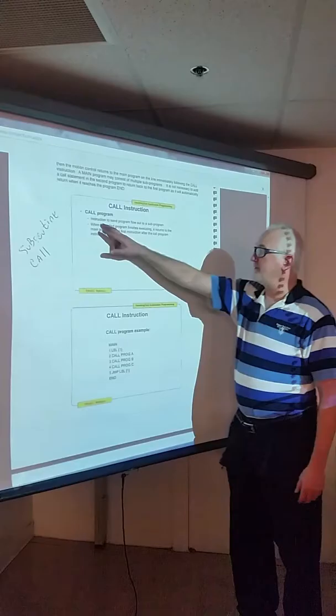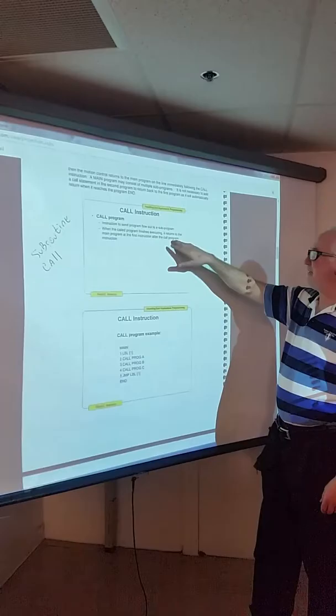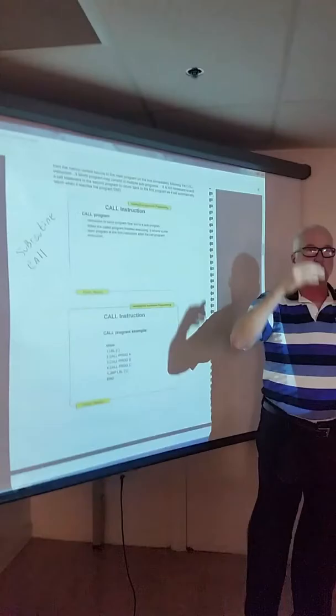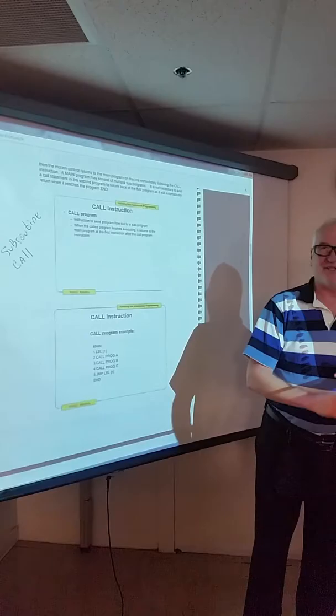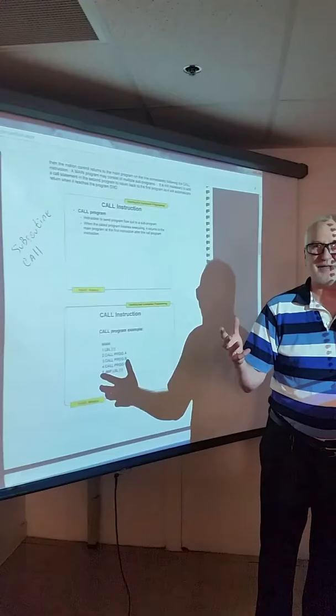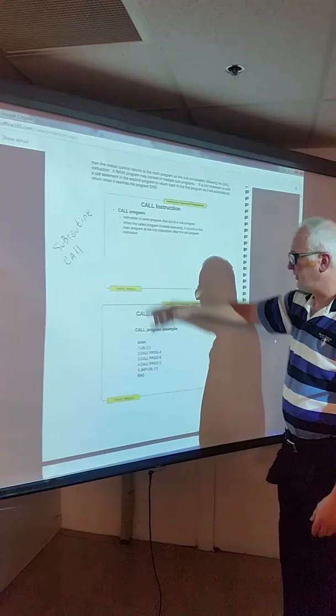Okay, the call instruction, we've done that. That's, as we say, subroutine. It says instruction to send a program flow out to a subprogram. When the call program finishes executing, it returns to the main program at the first instruction after the call instruction. So you could call, we were calling, you had a program to draw a square, to draw a circle, to draw a triangle or a rectangle, right? We had three different geometric shapes, and we just simply called those.